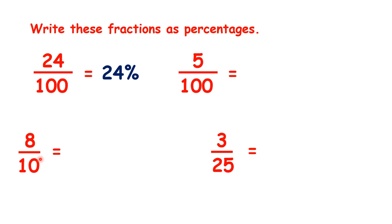Now, 8 tenths is equivalent to 80 hundredths, so we have 80%. Here, again, we already have our fraction with a denominator of 100, so we have 5%.